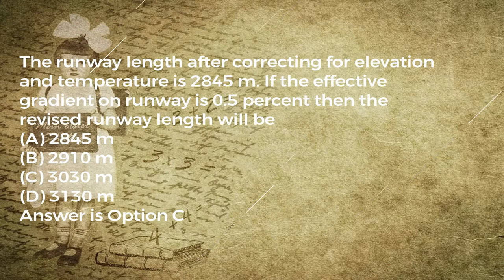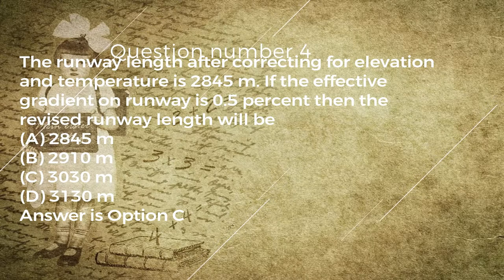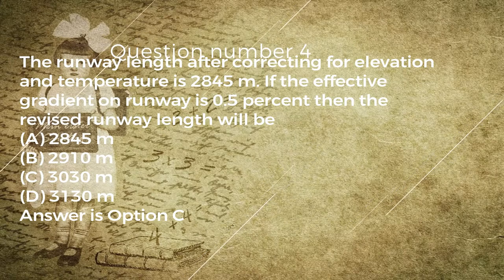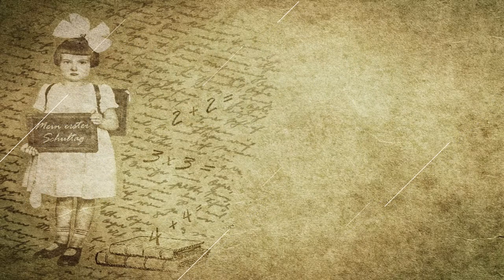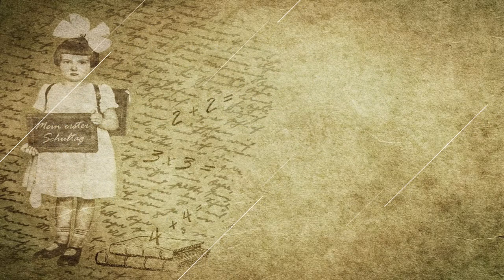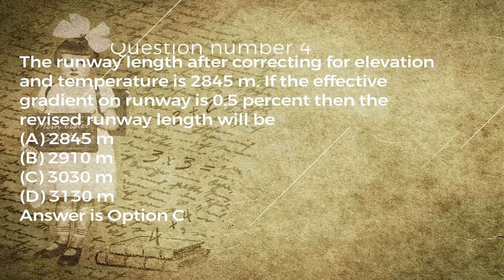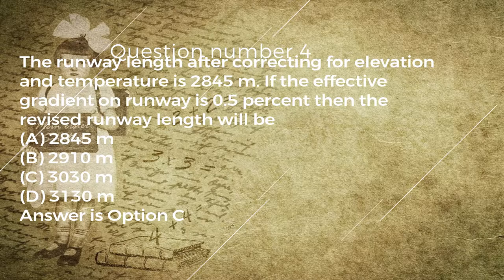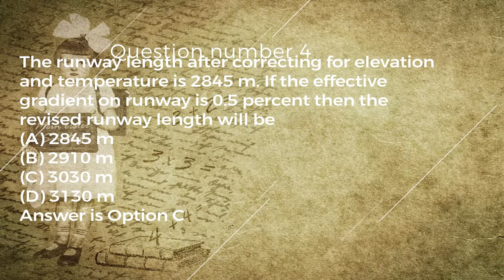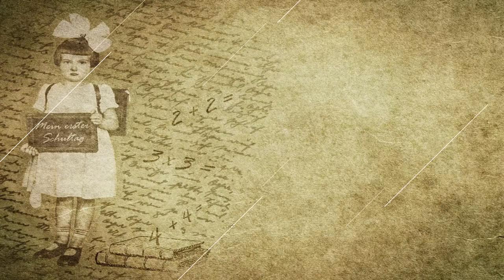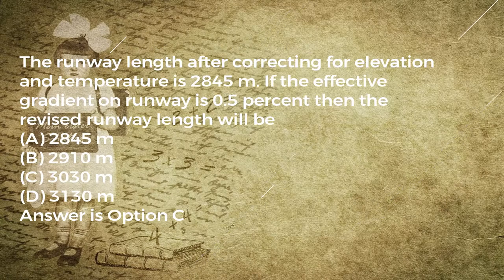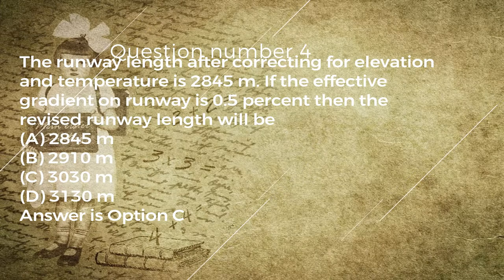Question number four: the runway length after correcting for elevation and temperature is 2,845 M. If the effective gradient on runway is 0.5%, then the revised runway length will be: A) 2,845 M, B) 2,910 M, C) 3,030 M, D) 3,130 M. Answer is option C.